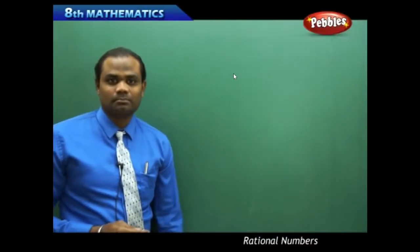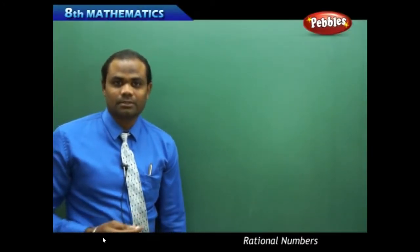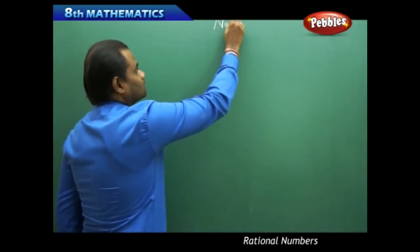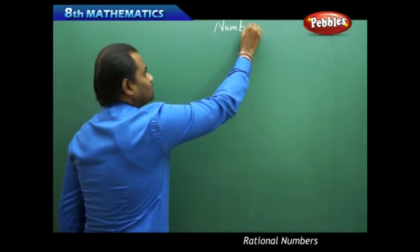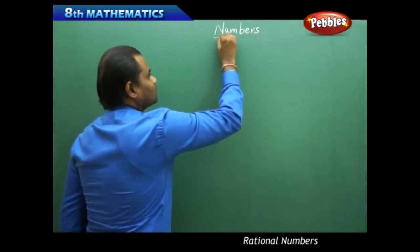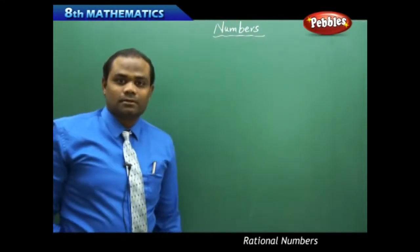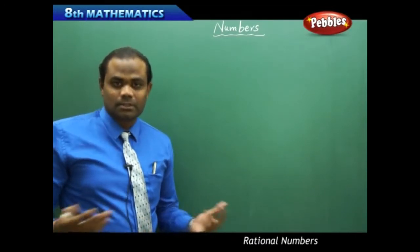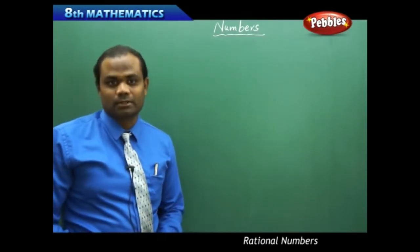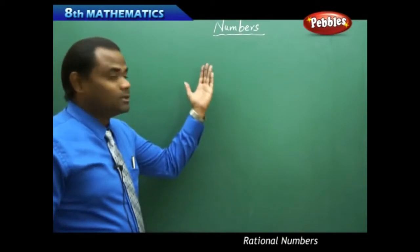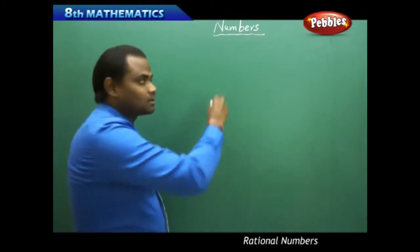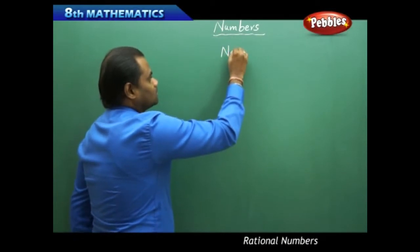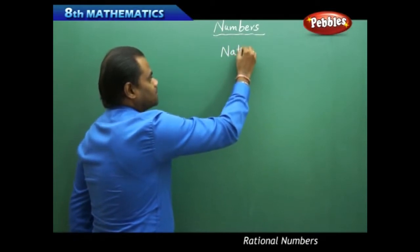We're going to discuss about numbers and the number system. We have seen different types of numbers in the past when discussing various aspects of mathematical contents. Today we'll be discussing on numbers, and the first and foremost type of numbers is the natural numbers.